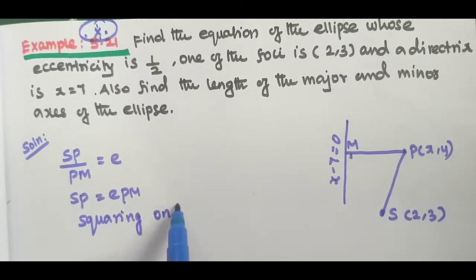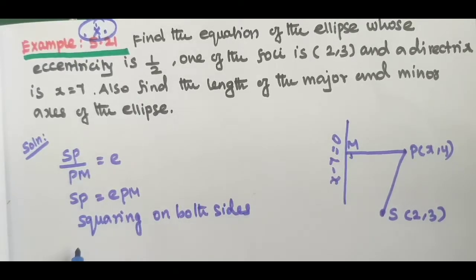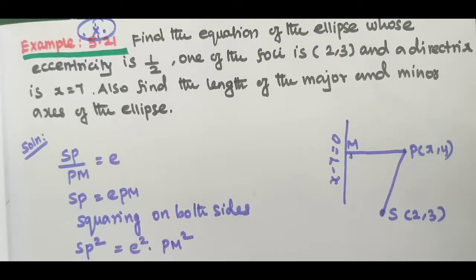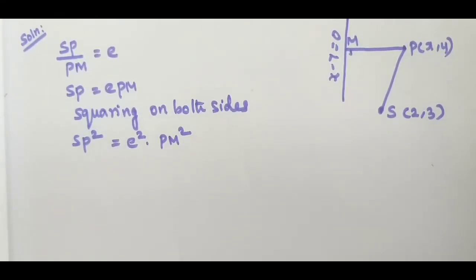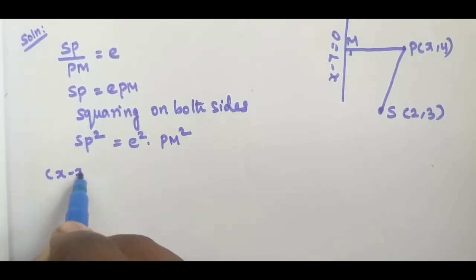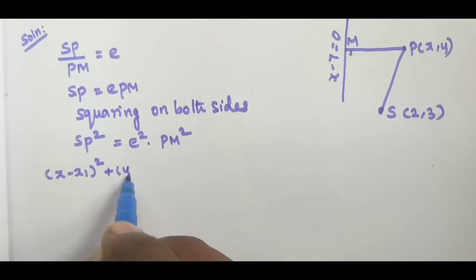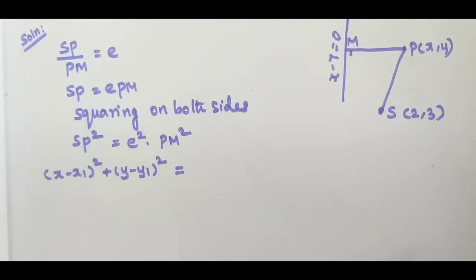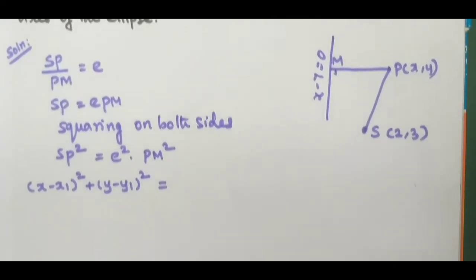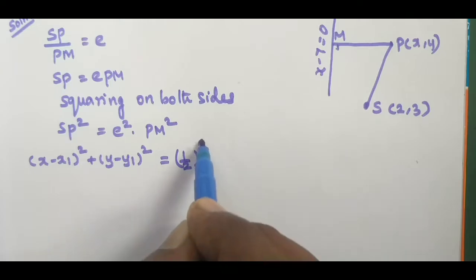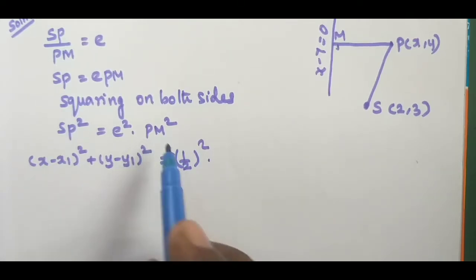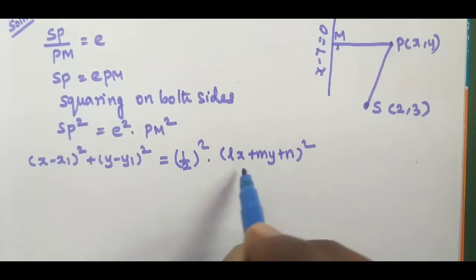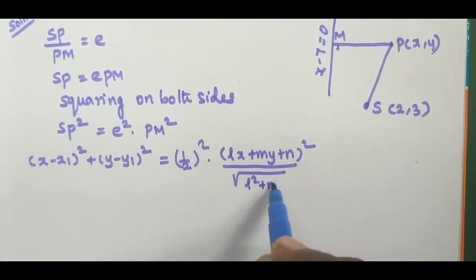Squaring both sides, SP² = e² into PM². Using the distance formula, PM² equals (lx + my + n)² divided by (l² + m²). So SP² equals e² into (lx + my + n)² divided by (l² + m²).